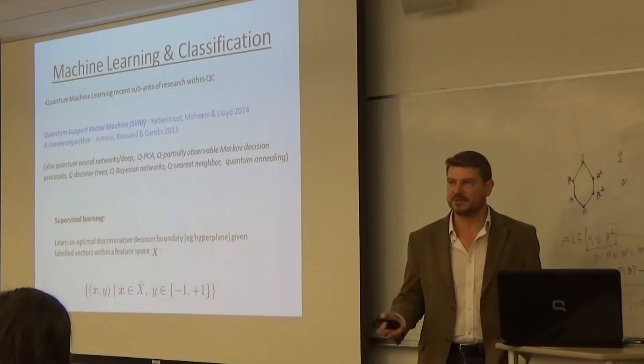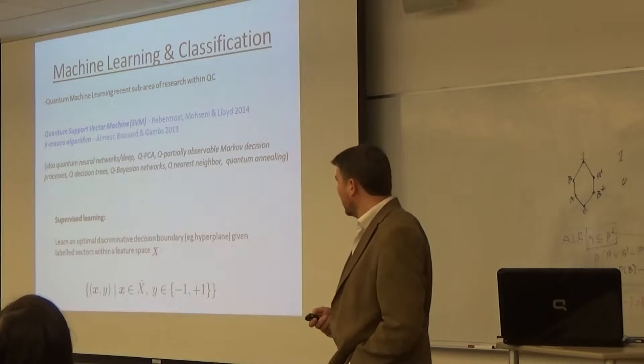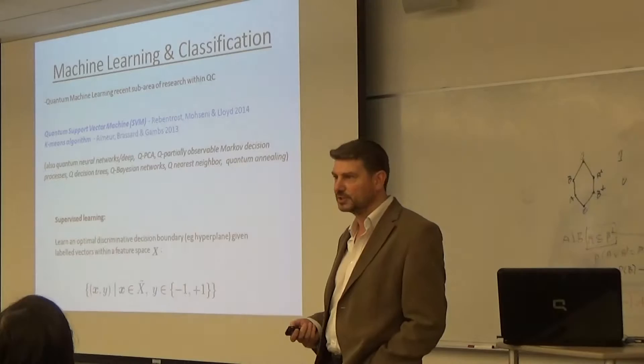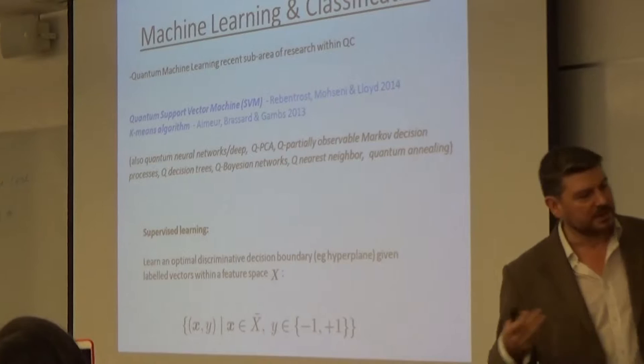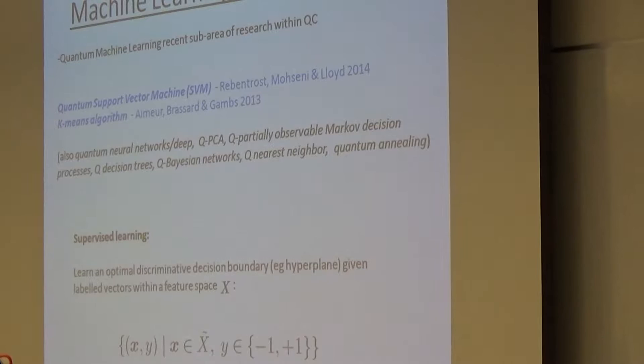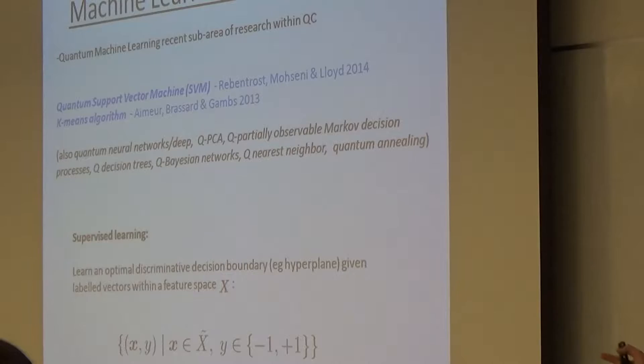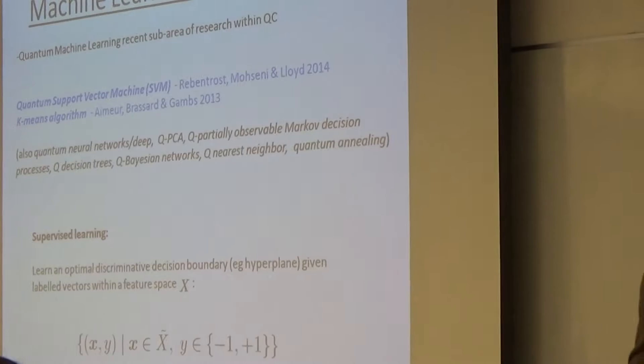Quantum machine learning is a relatively new field, a subset of quantum computing. There have been some notable successes to date. Perhaps the most emblematic one being the quantum support vector machine of Rebentrost, Mazzoni, and Lloyd. But there are a number of other algorithms: K-Means unsupervised clustering, quantum principal component analysis, quantum neural networks, quantum decision trees, and so on. Almost the full panoply of machine learning has been transferred in some form to the quantum domain.